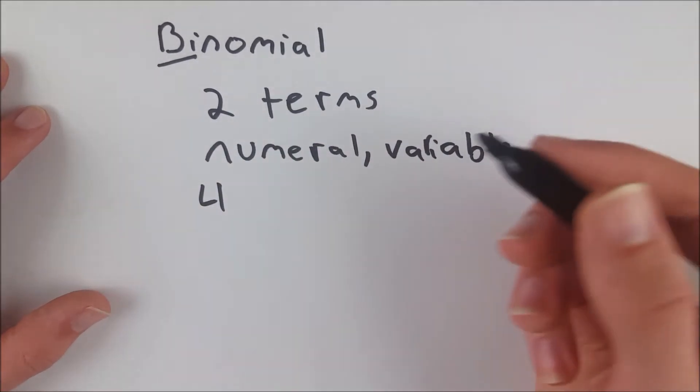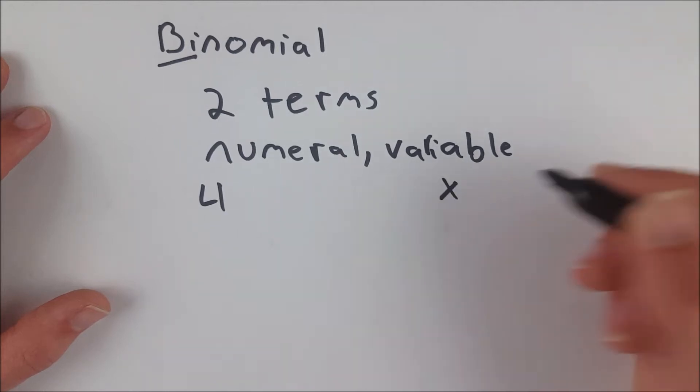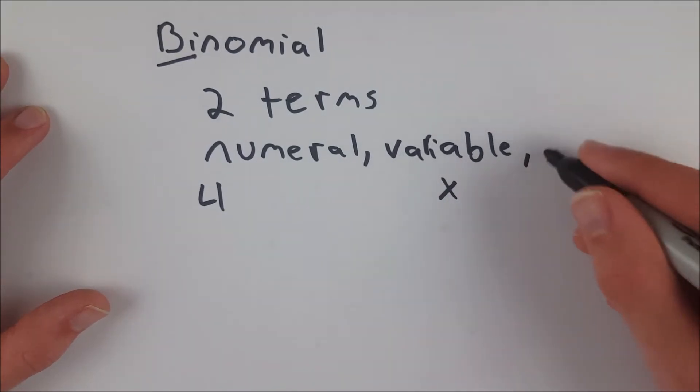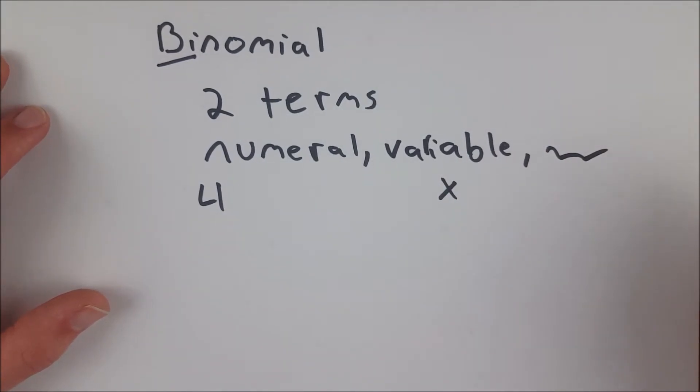numeral, we could have something like 4. Variable, we could have something like x. And then the third option, which I'm not going to write out because it's a lot of words, is just something like 4x, or 3x squared, anything like that, or 3xy.